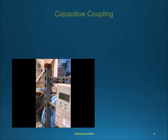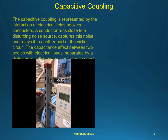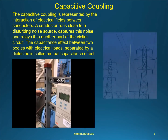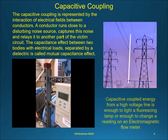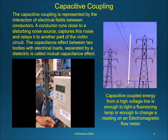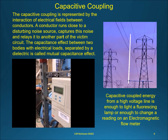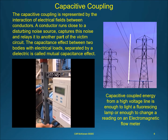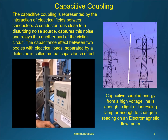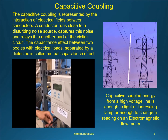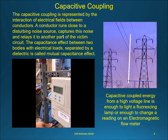Capacitive coupling is represented by the interaction of electrical fields between conductors. A conductor runs close to a disturbing noise source, captures this noise and relays it to another part of the victim circuit. The capacitance effect between two bodies with electrical loads, separated by a dielectric, is called the mutual capacitance effect. Capacitive coupled energy from a high voltage line is enough to light a fluorescent lamp. The effect of coupling can be seen in this video where simply moving the flow tube signal cable causes the coupling to increase or decrease, causing a shift in reading.